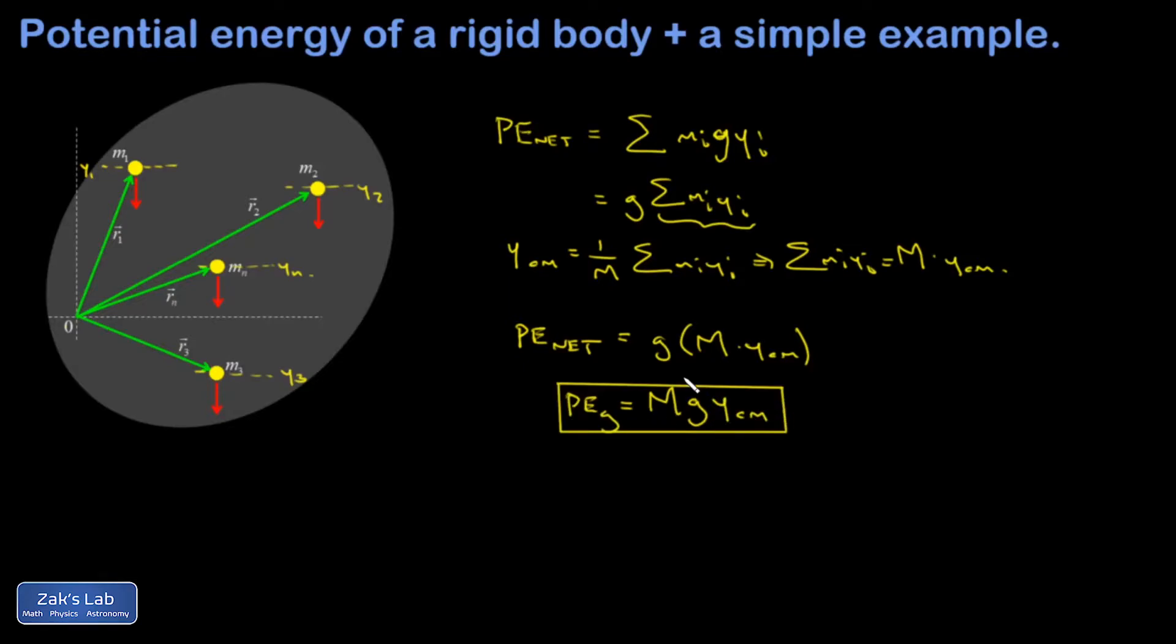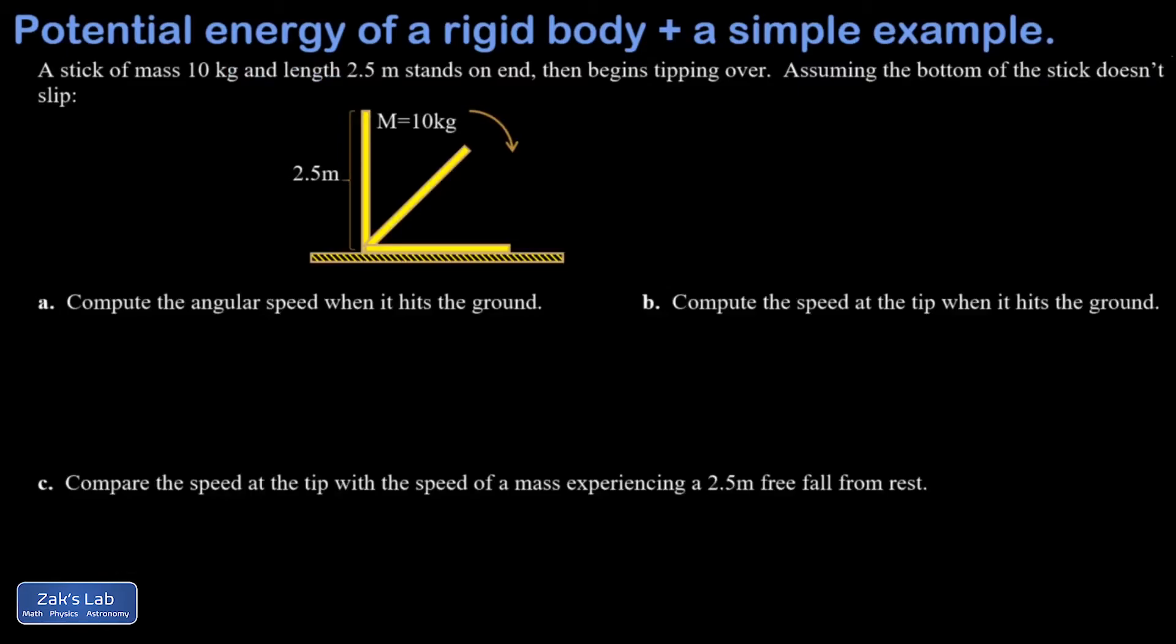So cool, for an extended object, all I have to do is identify where their center of mass is and what the total mass is. And I can tell you, based on where it is in space, what its gravitational potential energy is. And this allows us to solve problems. So let's apply this to a simple example.